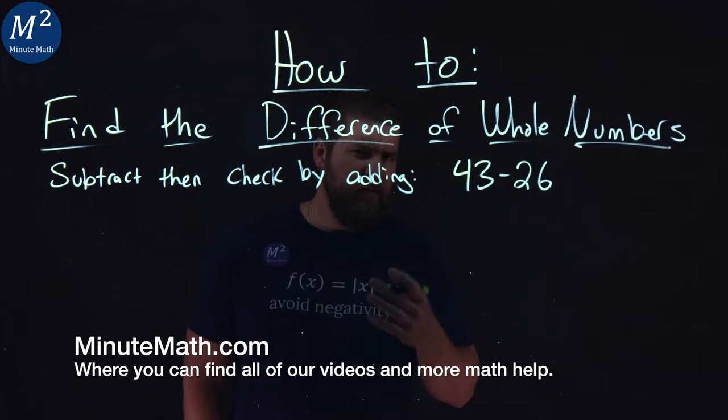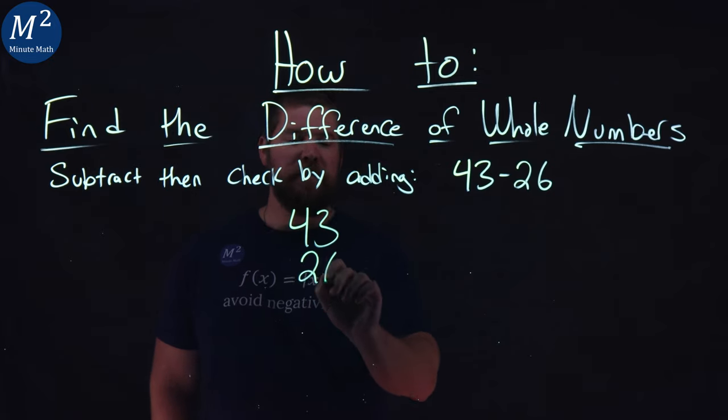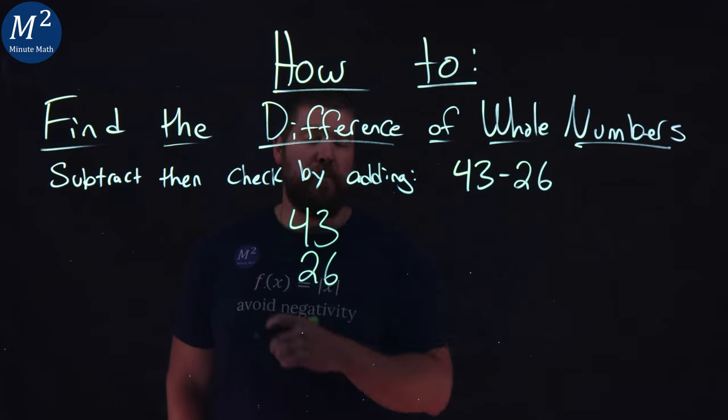Let's solve this the traditional way. I take a 43, and right underneath it, I write a 26, ensuring my ones and tens place line up.